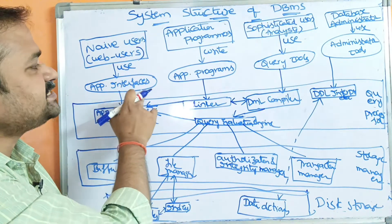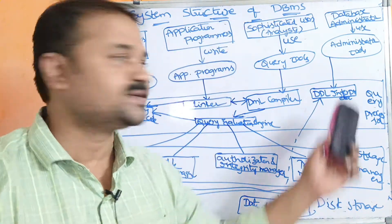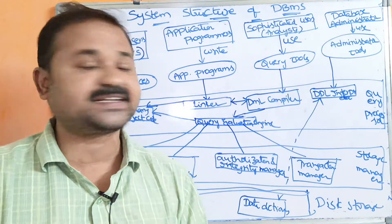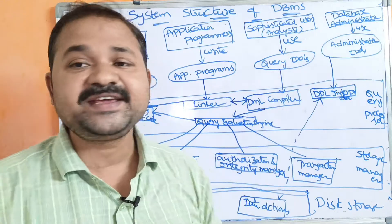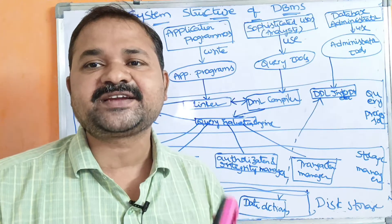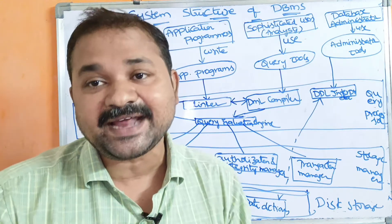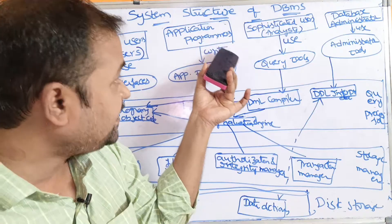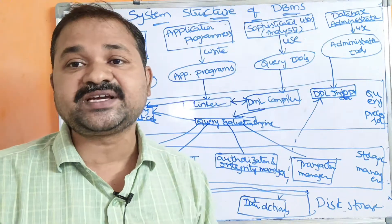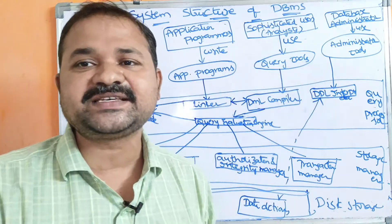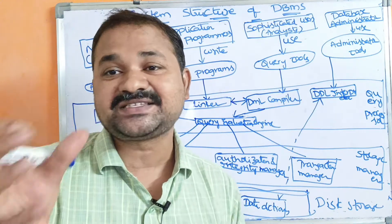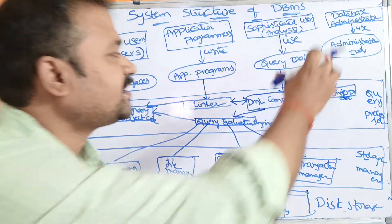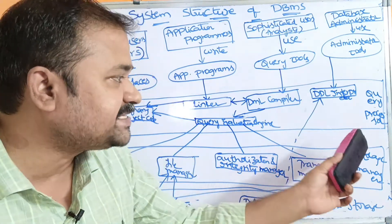So, naive users use application interfaces, application programmers write application programs, and sophisticated users use query tools. The next type of user is database administrators. Database administrators use various administrator tools. They are mainly useful for creating databases and granting permissions to each and every user. Application programmers and sophisticated users can only access databases for which permissions are granted by the database administrator.